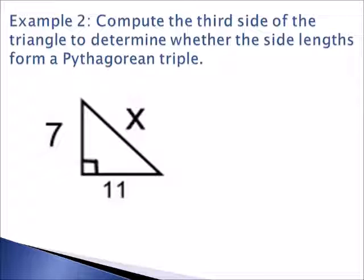Here's example two. Compute the third side of the triangle to determine whether the side lengths form a triple. Again, across from your 90 degree angle will be your hypotenuse and your legs will be labeled as a and b.